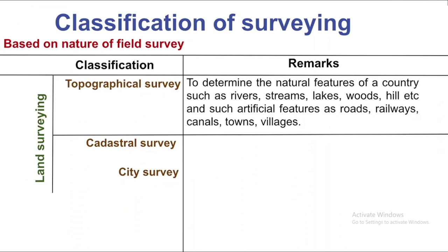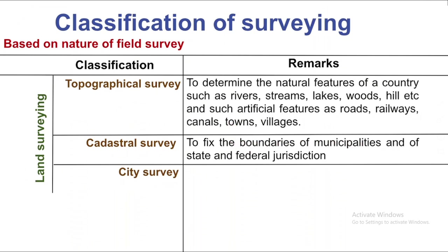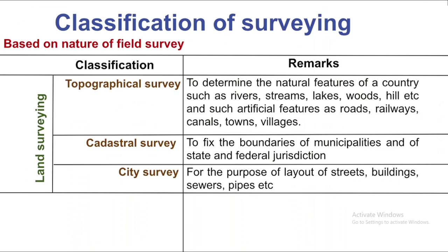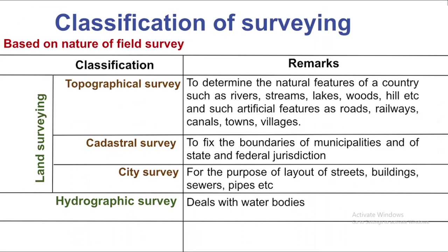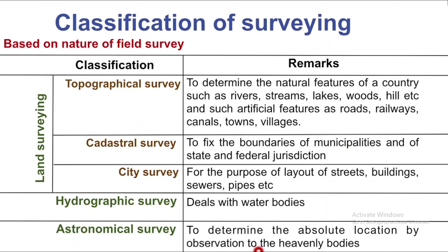We use the Cadastral Survey to fix the boundaries of municipalities, states, and federal jurisdictions. This is very important for determining property boundaries. The Hydrographic Survey deals with water bodies — also called Marine Survey — and is used to determine features such as sea level, water depth, and water levels.